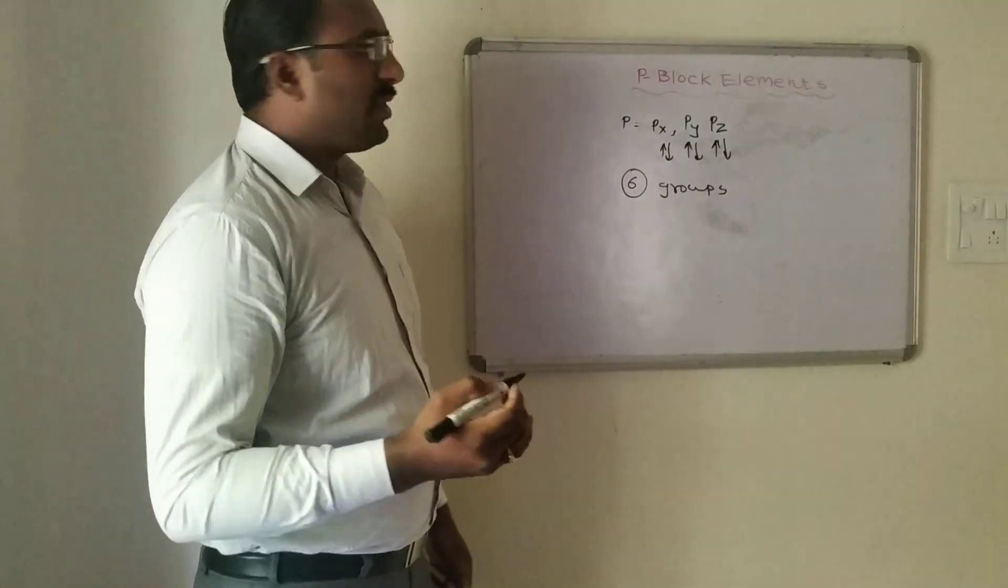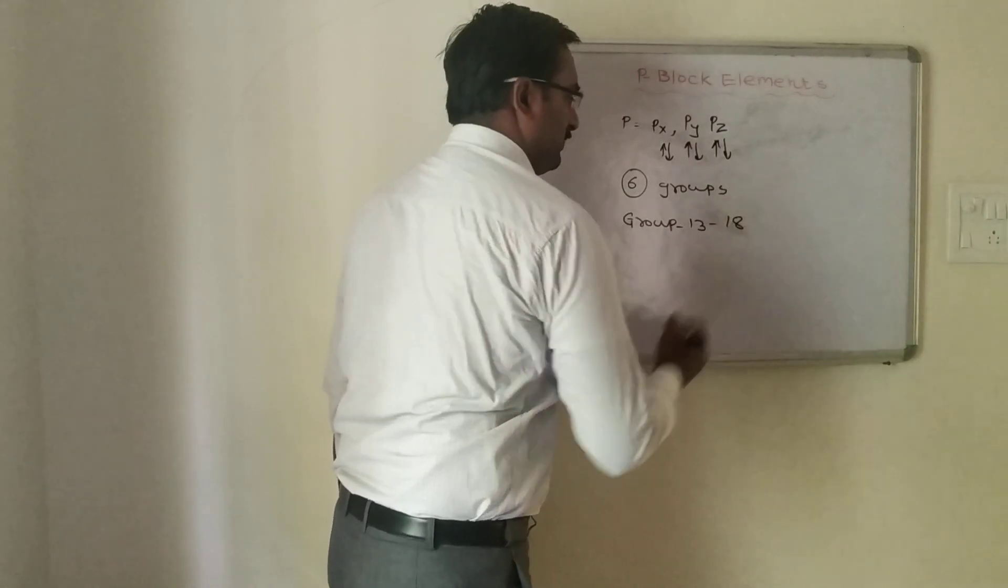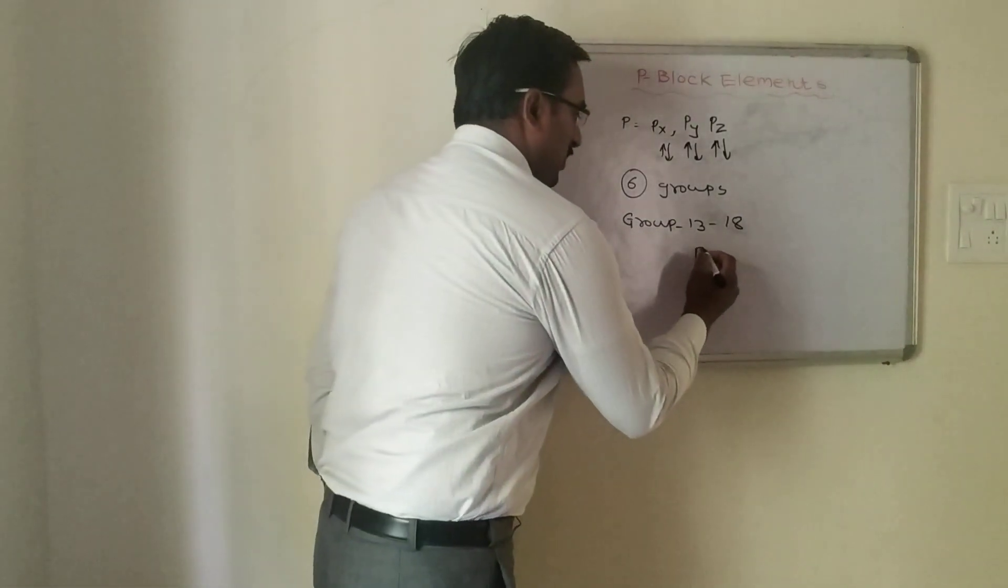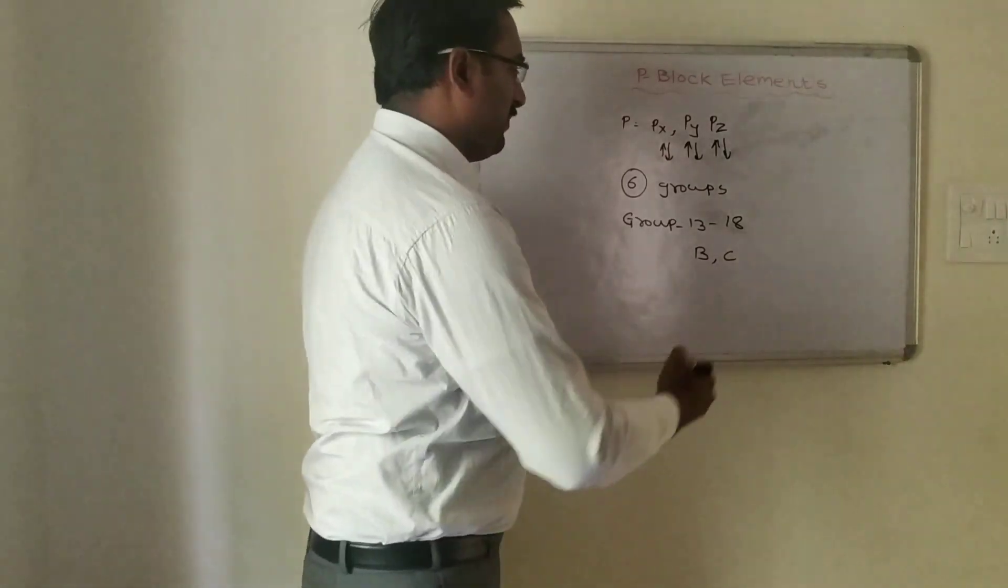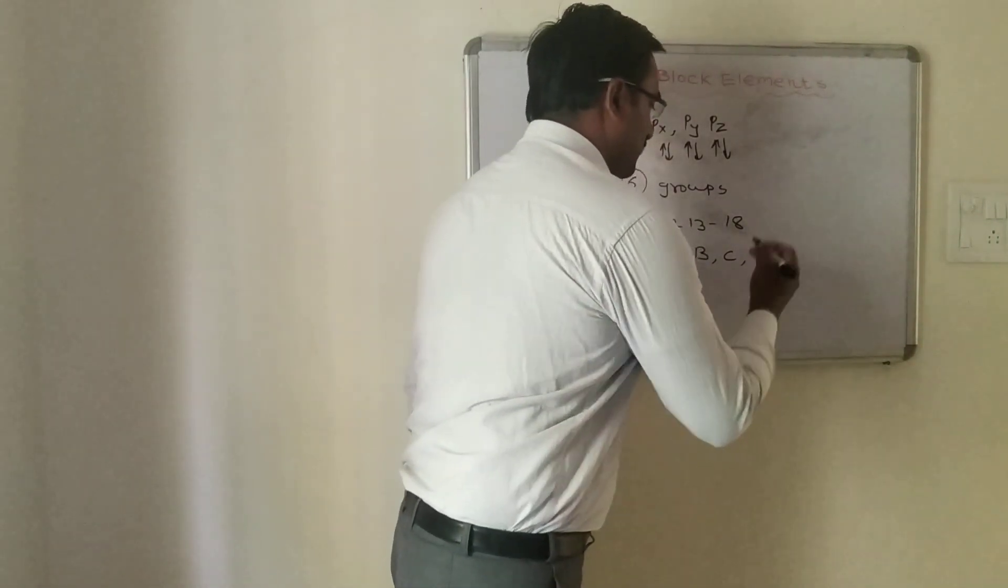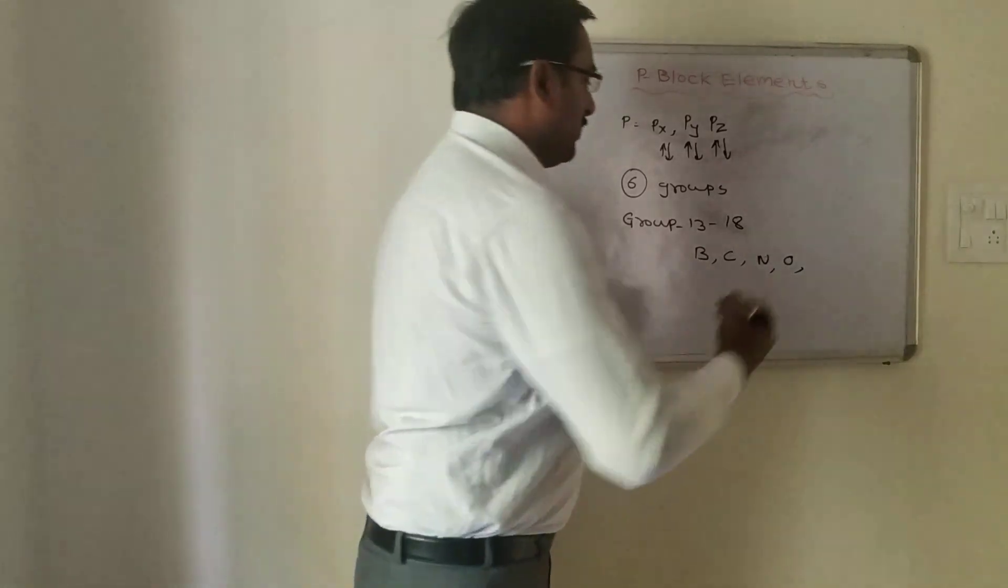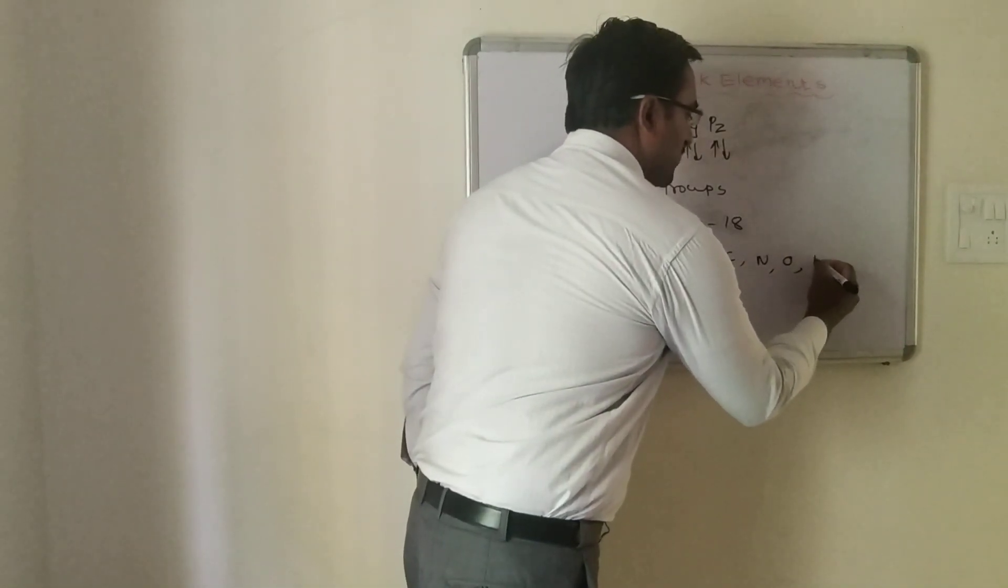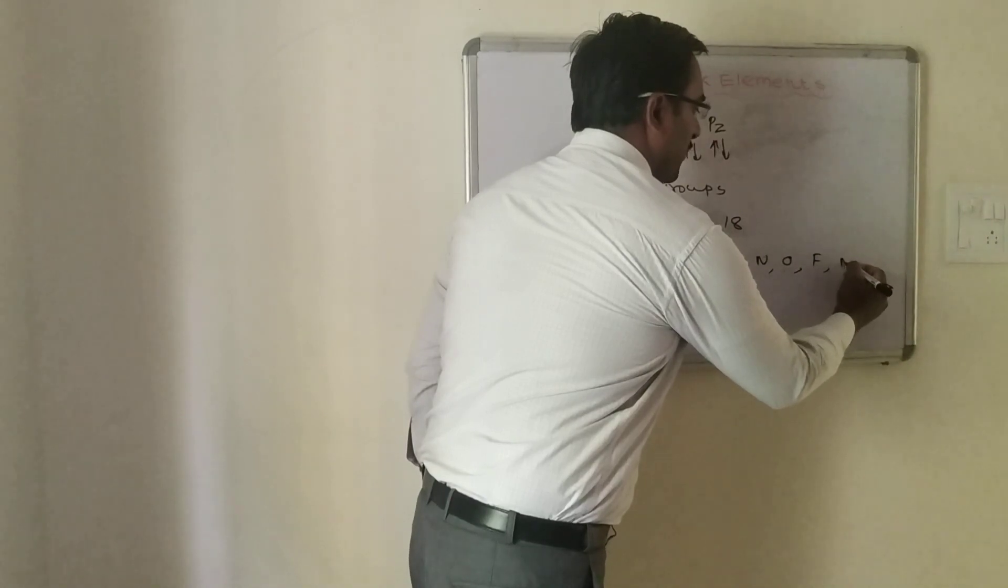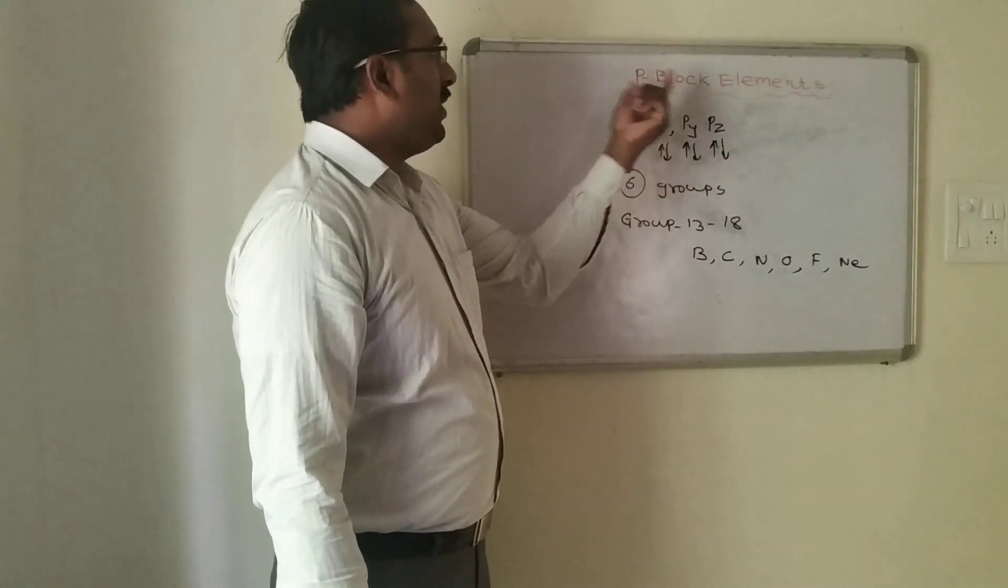Which are those groups? Group 13 to group 18. Group 13 is the boron family, group 14 is the carbon family, group 15 is the nitrogen family, group 16 is the oxygen family, group 17 is the halogens with representative member fluorine, and group 18 is the noble gases with neon in the second period. These are the group representative members of the p-block elements.